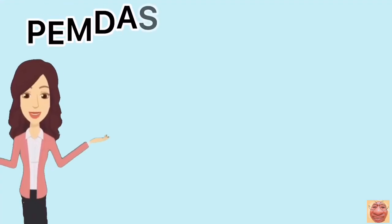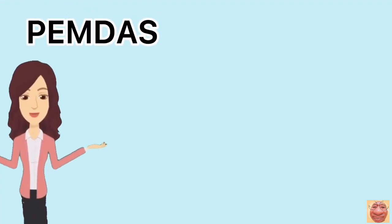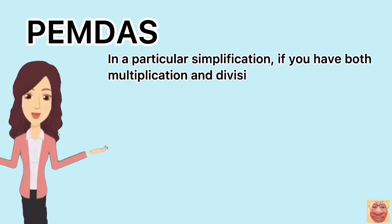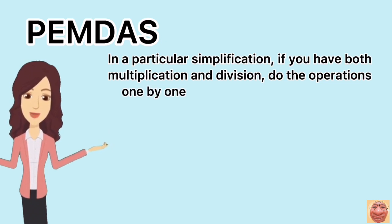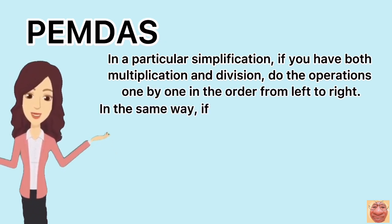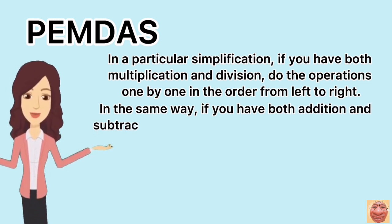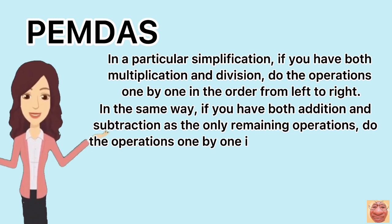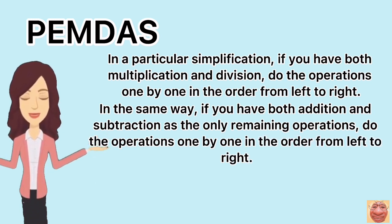Also, take note that PEMDAS has its special rules too. In a particular simplification, if you have both multiplication and division, do the operation one by one in the order from left to right. In the same way, if you have both addition and subtraction as the only remaining operation, do the operation one by one in the order from left to right.